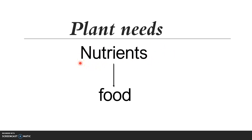But where can plants find those nutrients? Normally, nutrients can be found in the soil. When we water the plant, those nutrients dissolve in the water. Then plants get this water through their roots, so they can get the nutrients from this water. This is the first plant need: nutrients from the soil.